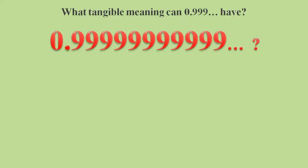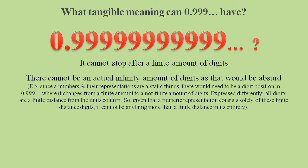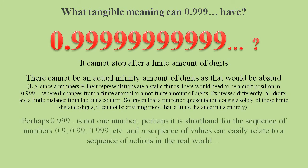But then what tangible meaning can 0.9 recurring have? It appears to go on endlessly. And surely there can't be an actual infinity of digits, because that would be absurd. If we abandon the idea that 0.9 recurring is a single value, and we think of it as a sequence of values, then we can give it a tangible meaning that we can relate to the real world.